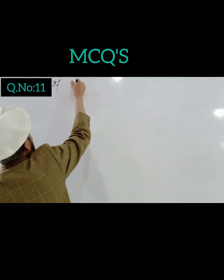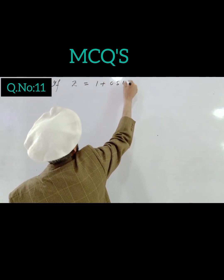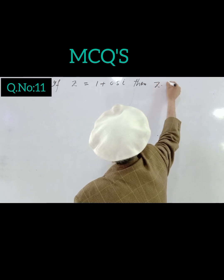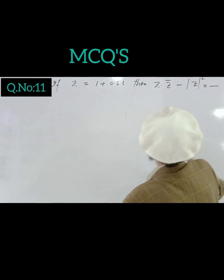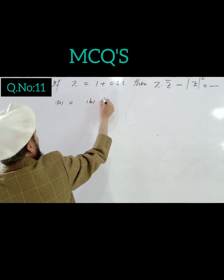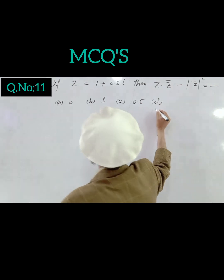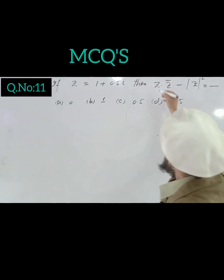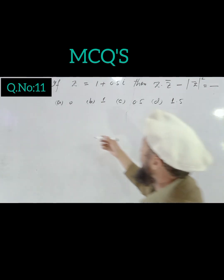Question 16: If z equals 1 plus 0.5 iota, then z times z-conjugate minus z squared equals what? The options are 0, 1, 0.5, or 1.5. The result is automatically 0, because z times z-conjugate equals the absolute value of z squared.